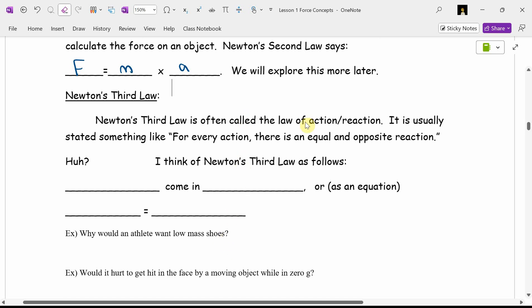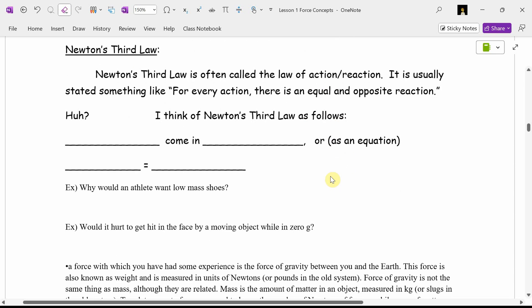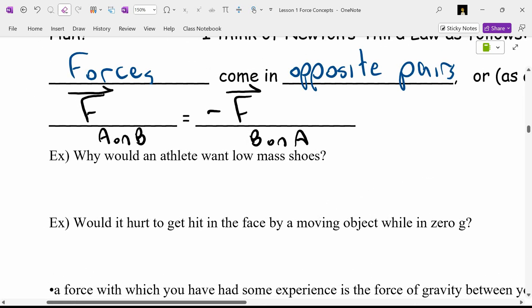Newton's third law is often called the law of action-reaction. For every action, there is an equal and opposite reaction, which is confusing. Mr. Dueck says this: Forces come in technically opposite pairs. But we'll probably shorten that to forces come in pairs. As an equation, it says the force of object A on object B equals negative force of object B on object A. Forces come in pairs.